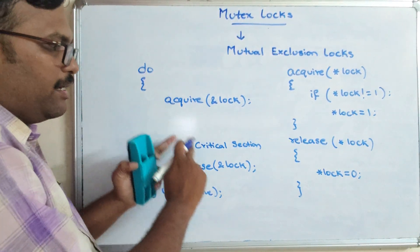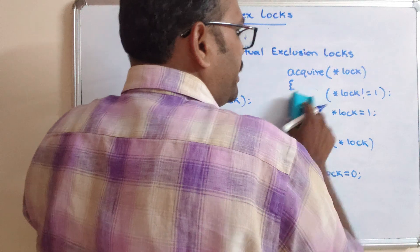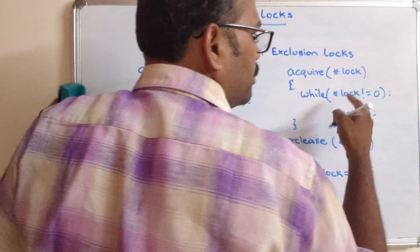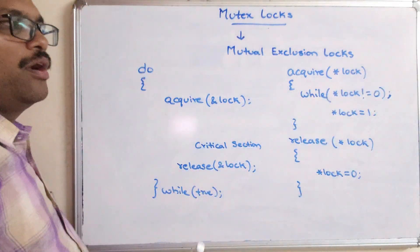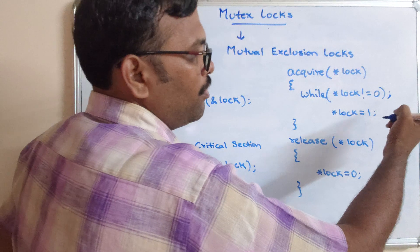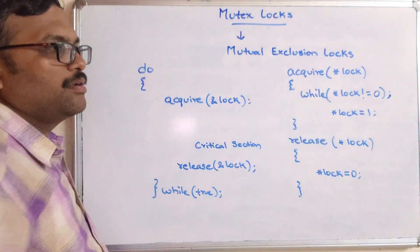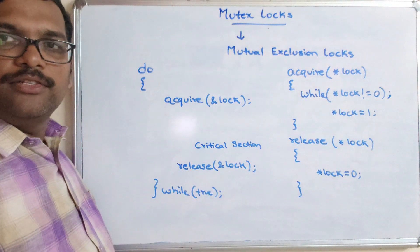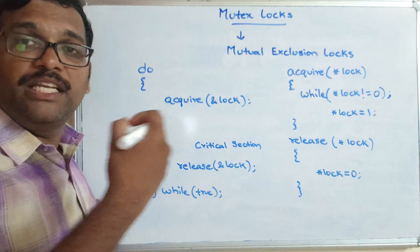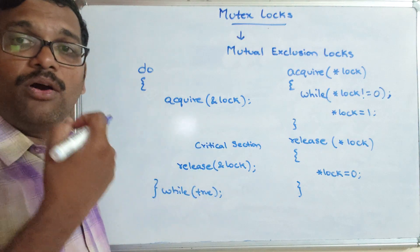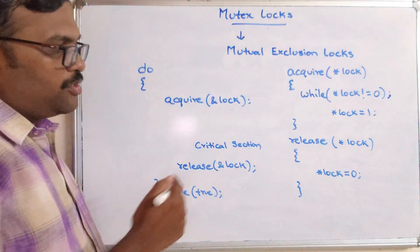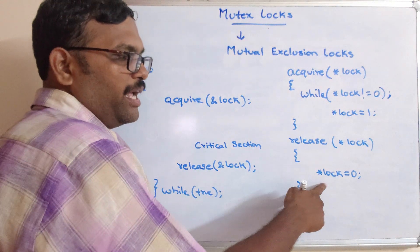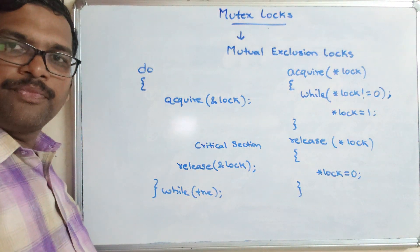So the flow is: acquire lock, then critical section, then release lock. While lock is not equal to zero, the process waits. Once the lock value is zero, the process comes out of the loop and the lock is initialized to one — meaning the lock has been granted. After the process completes its transaction, it calls release lock, where the lock value becomes zero again.